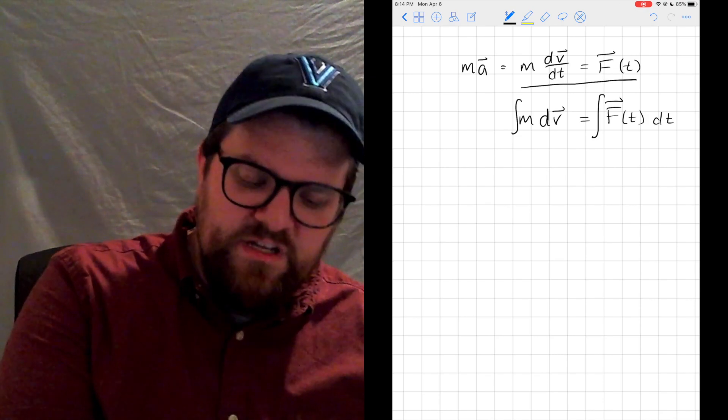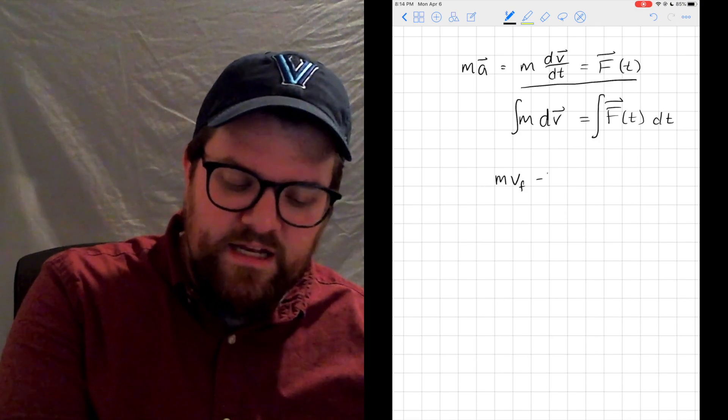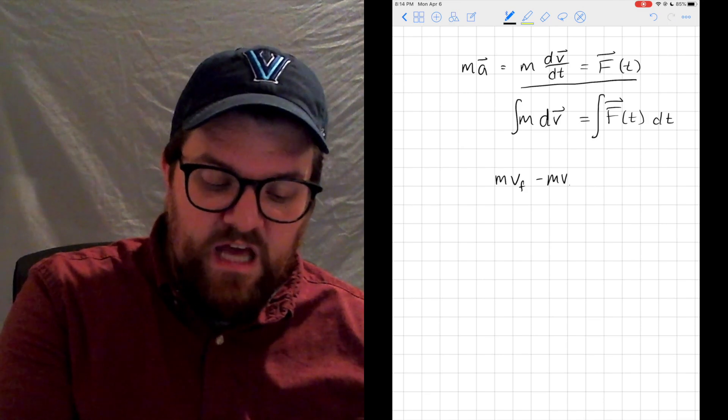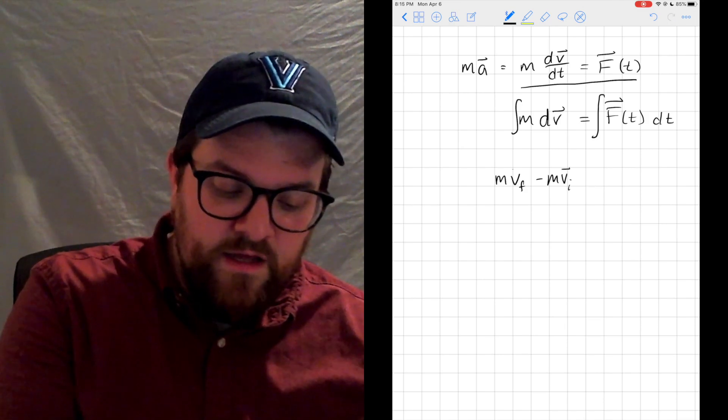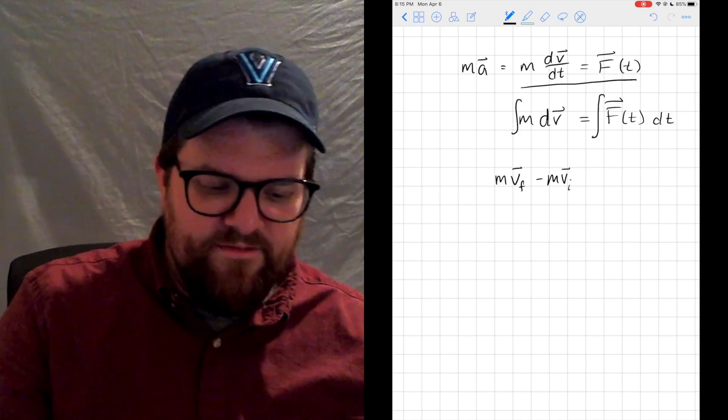If I integrate both sides, it's going to be a definite integral. I'm not writing out the bounds in this step right now, but I'm going to say m*v_f minus m*v_i. That is my evaluation of the integral on the left hand side.